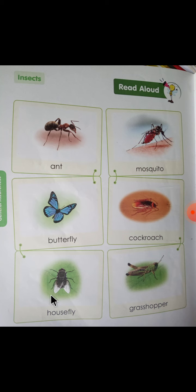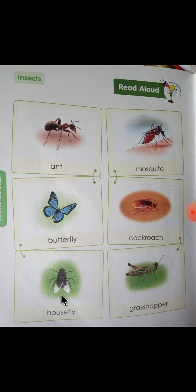Next is House Fly. अपने मक्खी घरों पर देखी होगी। जब कोई गंदी smell आ रही हो या गंदी चीज़ें हों, नाली के पास — वहाँ House Fly लग जाती है। H-O-U-S-E F-L-Y, House Fly, मतलब मक्खी।